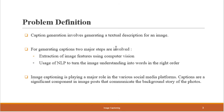Coming to the first topic: the problem definition. I am working on the caption generation process. Caption generation involves generating a textual description for an image — given an image, you can interpret it and give a sequence of words describing that image. Two major steps are involved: first, extraction of image features using computer vision, applying filters and getting all feature vectors; and second, natural language processing to turn that image understanding into words in a correct sequence to generate a caption.